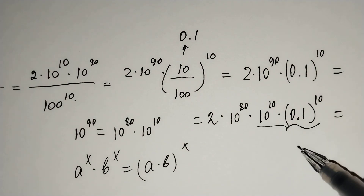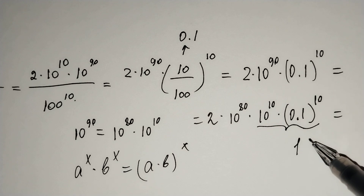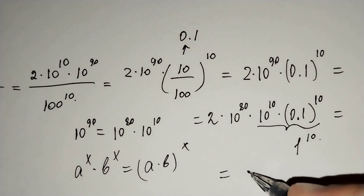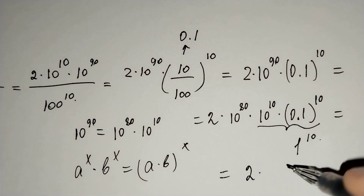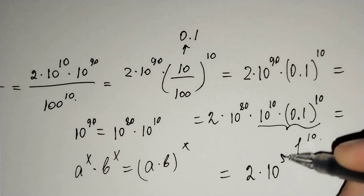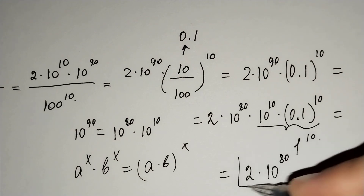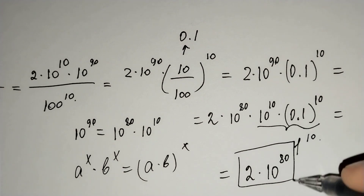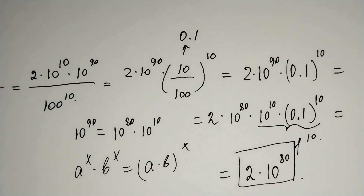This equals 2 times 10 power 80 times (10 times 0.1) power 10, which is 2 times 10 power 80 times 1 power 10, giving us 2 times 10 power 80 as our answer. Thanks for watching — don't forget to subscribe to my channel and give a thumbs up!